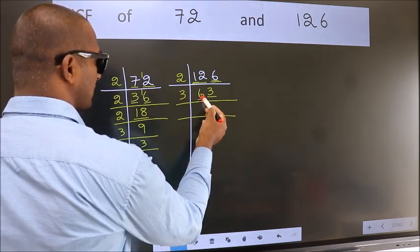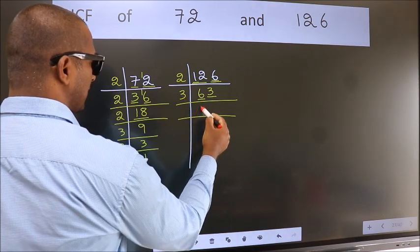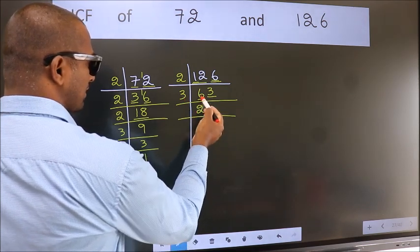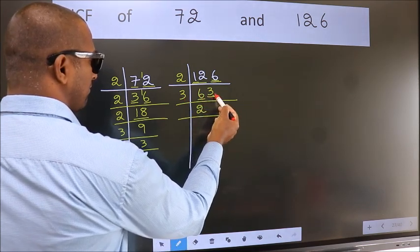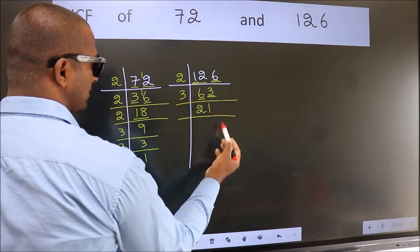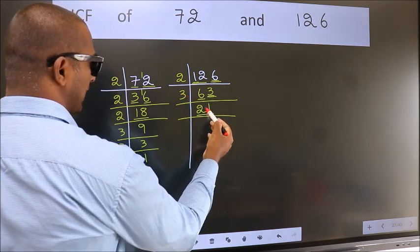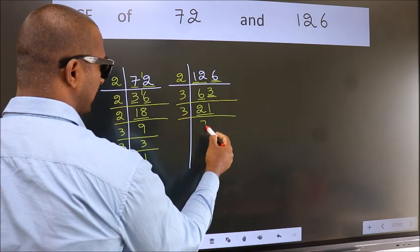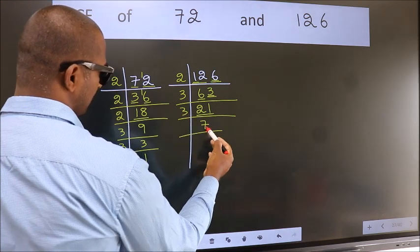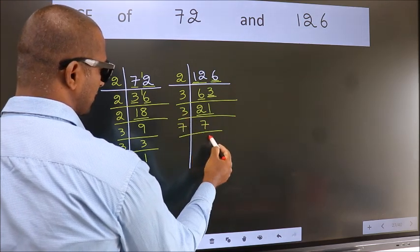First number 6. When do we get 6 in 3 table? 3×2=6. The other number 3. When do we get 3 in 3 table? 3×1=3. Now 21 is 3×7. 7 is a prime number, so 7×1=7.